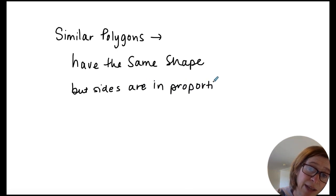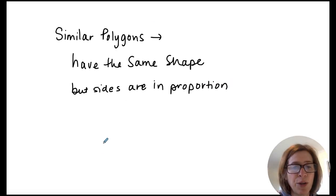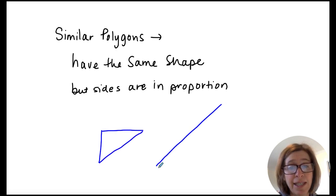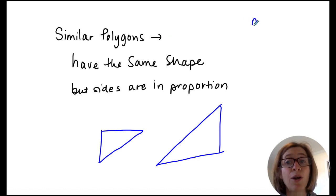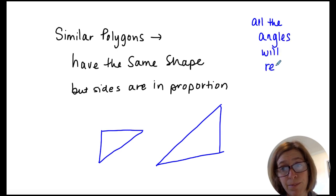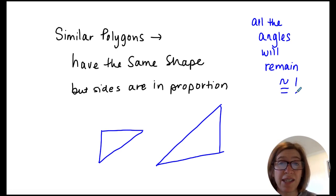And I know in your Desmos activity, what you noticed was regardless of the side lengths in those triangles, the angle measure did not change. The angle stayed the same. And so when you're looking at similar polygons, all the angles will remain congruent. And that can get tricky because that means we have congruent parts in similar figures, and then we also have proportional parts or things that are in the same ratio.